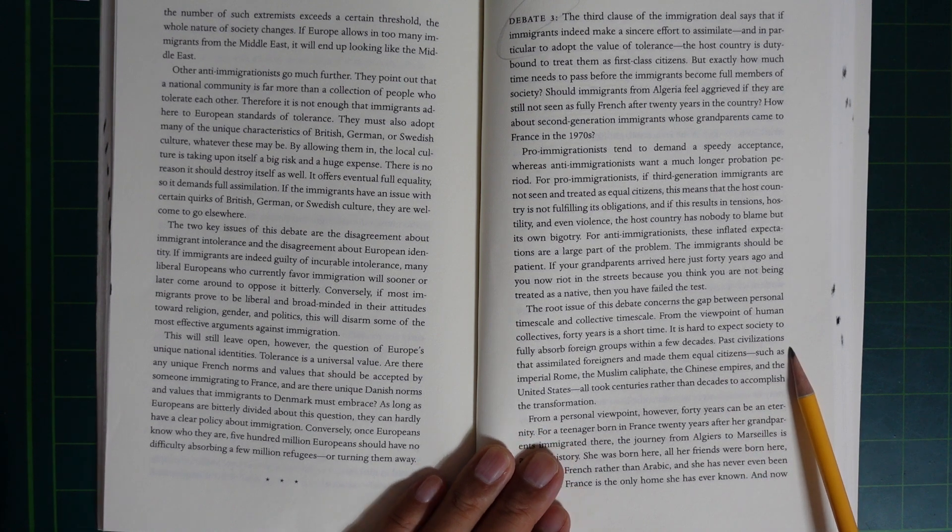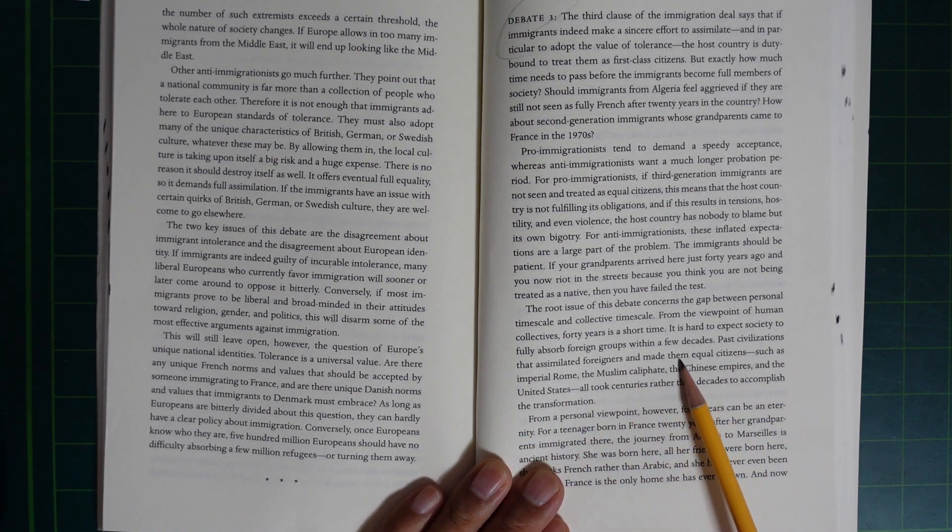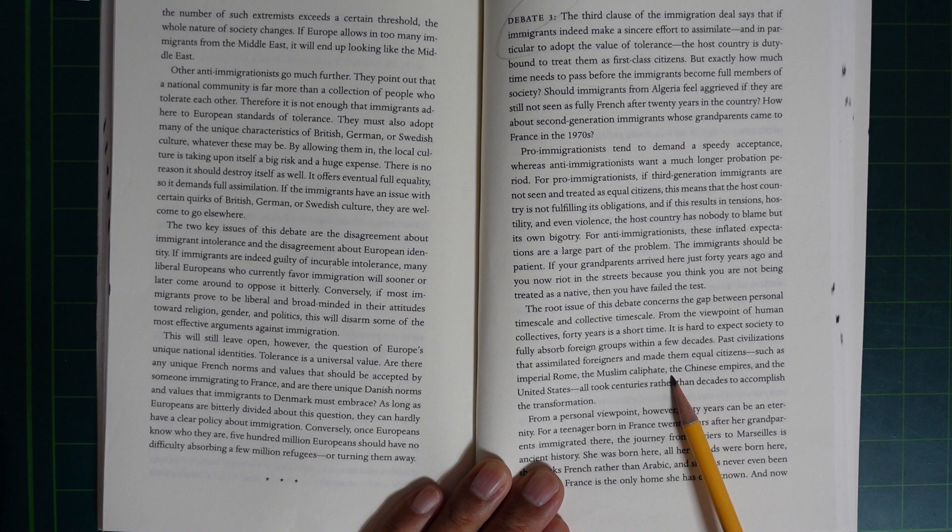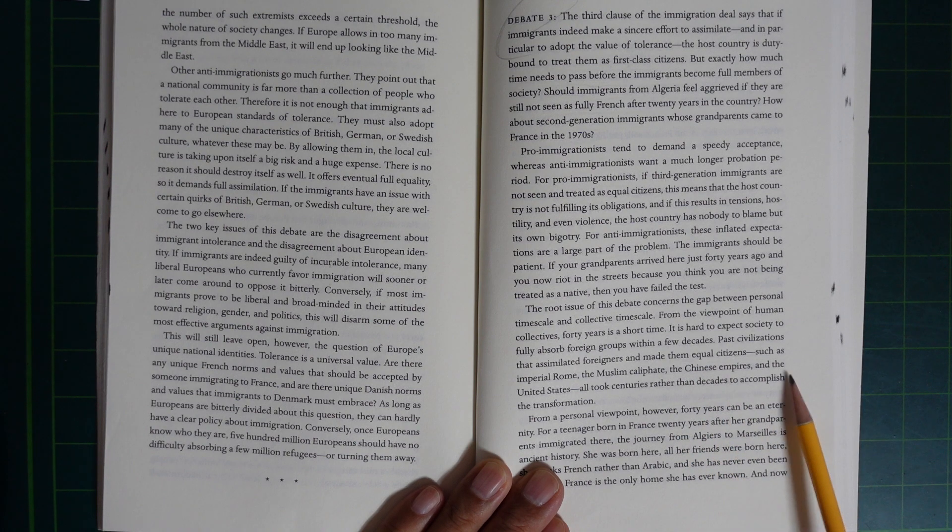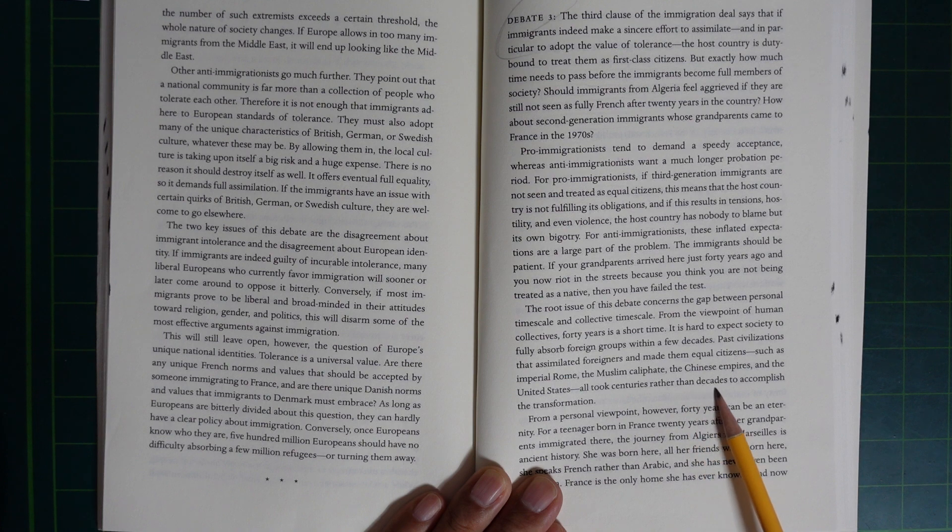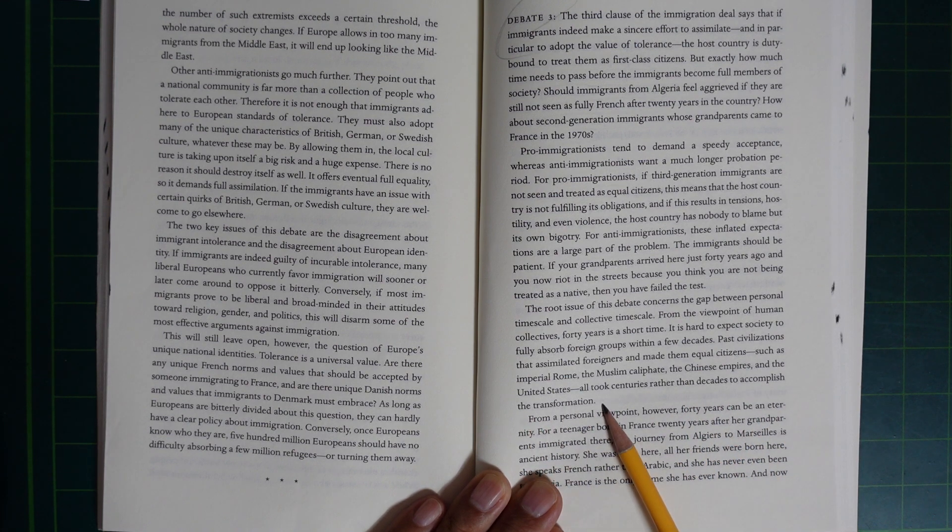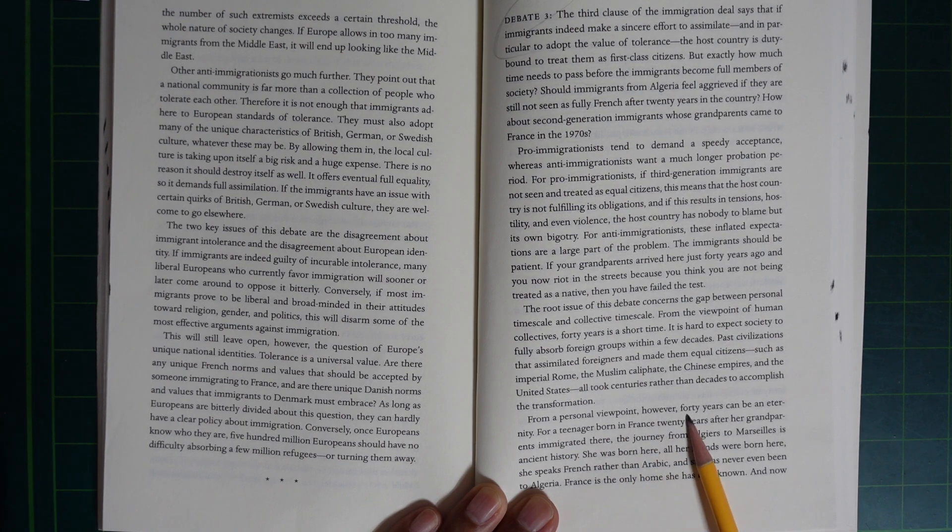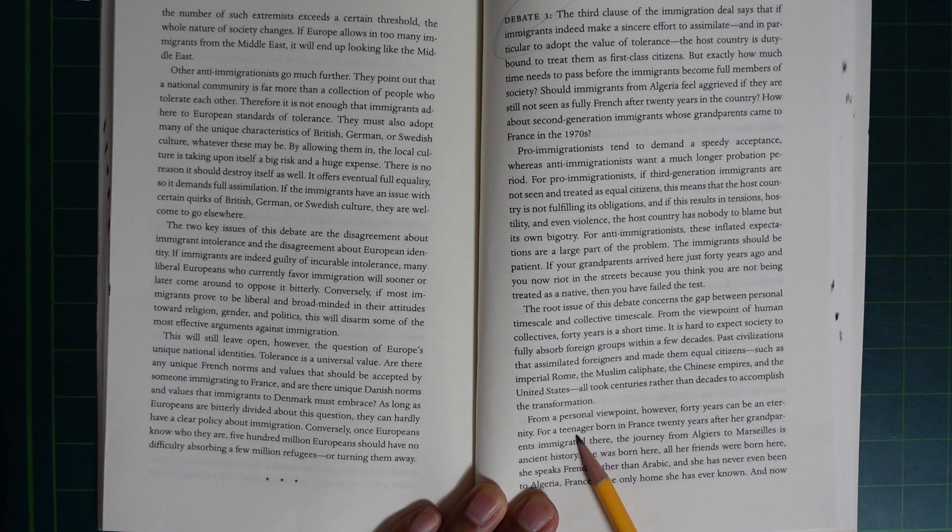Past civilizations that assimilated foreigners and made them equal citizens, such as Imperial Rome, the Muslim Caliphate, the Chinese Empire, and the United States, all took centuries rather than decades to accomplish the transformation. From a personal viewpoint, however, 40 years can be an eternity. For a teenager born in France,